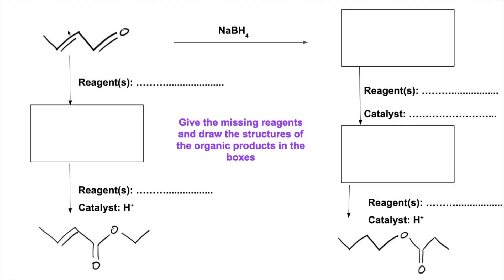I'll make a start. I'm going to go across the top and down the right hand side and then I'll finish by going down the left. So if we look at the functional groups we've got in this starting molecule, we've got the alkene group and we've got the aldehyde group. So we've got this NaBH4 — this is a reducing agent — so it's going to reduce this aldehyde group to a primary alcohol group. So the structure in the top right hand box looks like that.